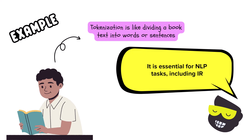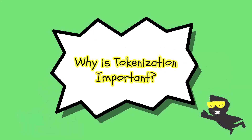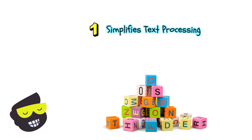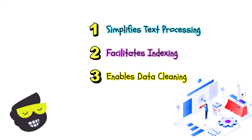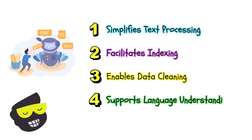When it comes to why tokenization is important, first it simplifies text processing — breaking it down makes it easier to analyze and allows algorithms to work with manageable units. It also facilitates indexing: in information retrieval, indexing relies on tokens, and by tokenizing text you create an index of terms that can be quickly searched. Additionally, it enables data cleaning by helping identify and remove unwanted characters or words like punctuation or stop words. And it supports language understanding, allowing machines to process human language more effectively, paving the way for more advanced NLP tasks.